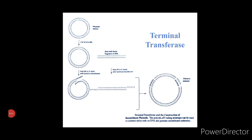Terminal deoxynucleotidyl transferase is obtained from calf thymus tissue. It is a template-independent DNA polymerase because it is able to synthesize a new DNA polynucleotide without base pairing of the incoming nucleotides to an existing strand of DNA or RNA. Its main role in recombinant DNA technology is in homopolymer tailing. Terminal transferase catalyzes the repetitive addition of mononucleotide units from a deoxynucleotide triphosphate to the terminal 3' OH group of a DNA molecule. This enzyme has a molecular weight of 32,000 Daltons and consists of two subunits each with a molecular weight of 26,500 Daltons and 8,000 Daltons.